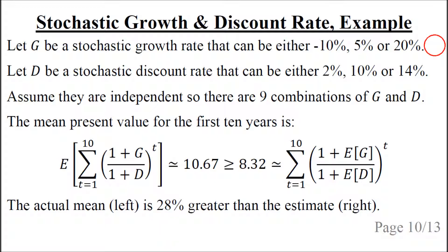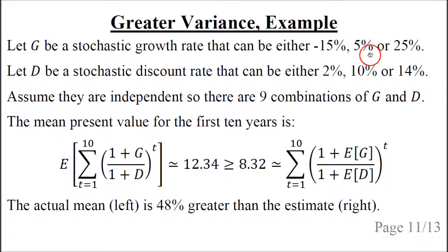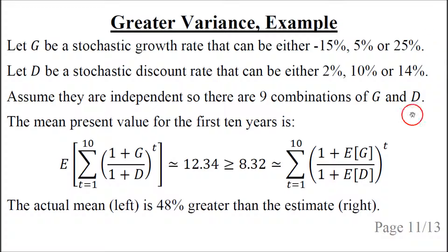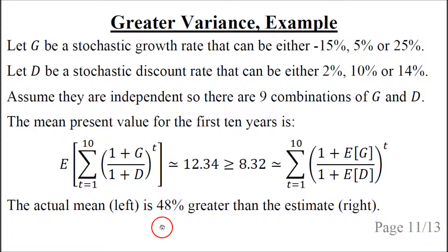Now let's see what happens if we increase the variance of the growth rate. The growth rate can now be either minus 15%, 5%, or 25% — the same mean of 5% as before, but with greater variance. The discount rate is the same as before, and they are again assumed to be independent. Now the actual mean present value is 12.34, while the estimated mean is about 8.32 — the same as before, since we use the same mean rates. But now the actual mean is about 48% greater than the estimate, demonstrating that increasing the variance of the growth rate increases the difference between the actual and estimated mean present value.